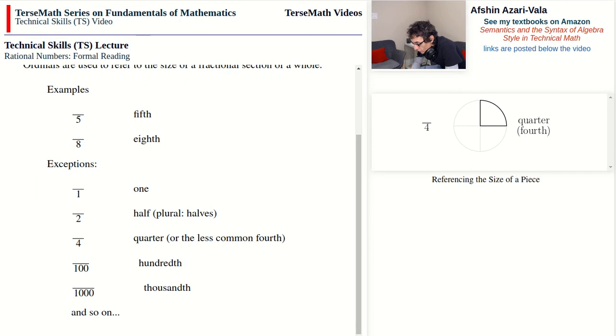This pattern continues. If your denominator is ten thousand, then we refer to the size of a piece as a ten thousandth.